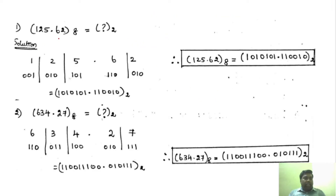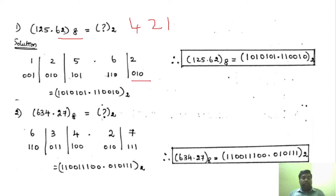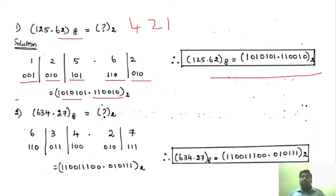This is the octal number; we need to find out the binary value. I am writing each digit separately with some space: 1, 2, 5 dot 6, 2. Now we write the corresponding binary equivalent using the 421 code. You can see: 001 for 1, 010 for 2, 101 for 5, then the decimal point, 110 for 6, and 010 for 2. You combine them and that is the binary value for this octal number.